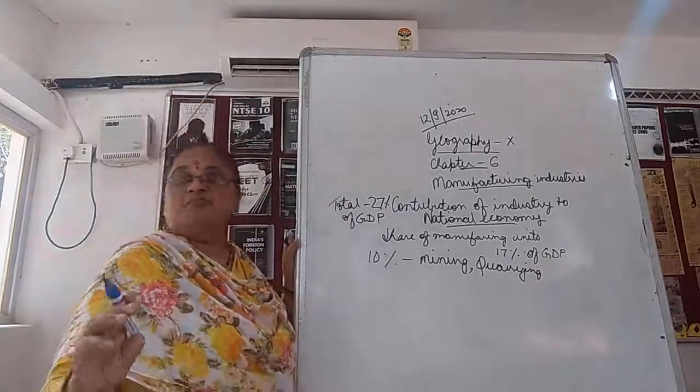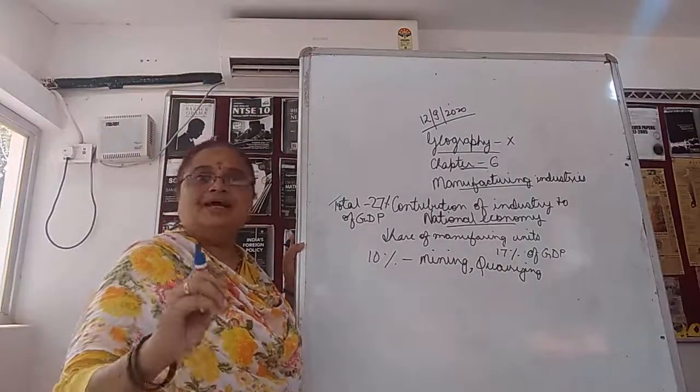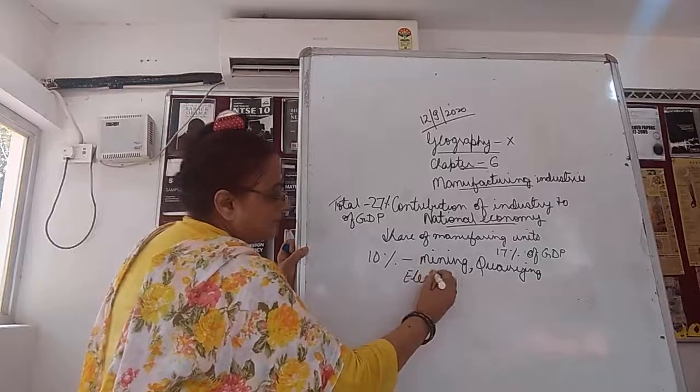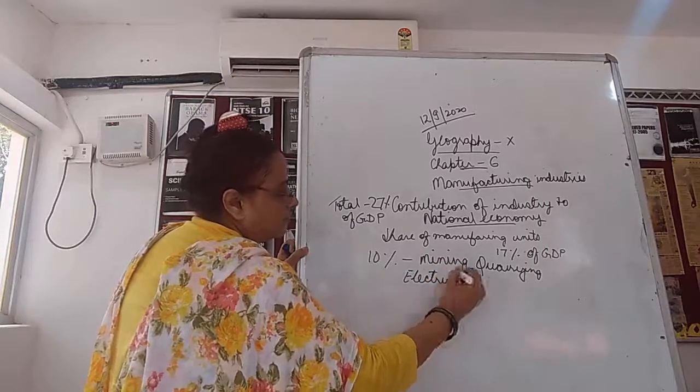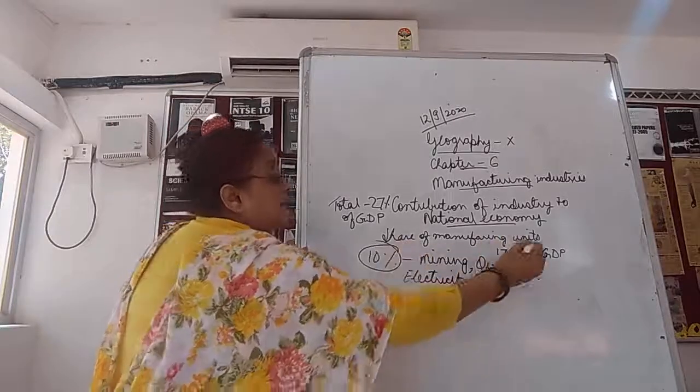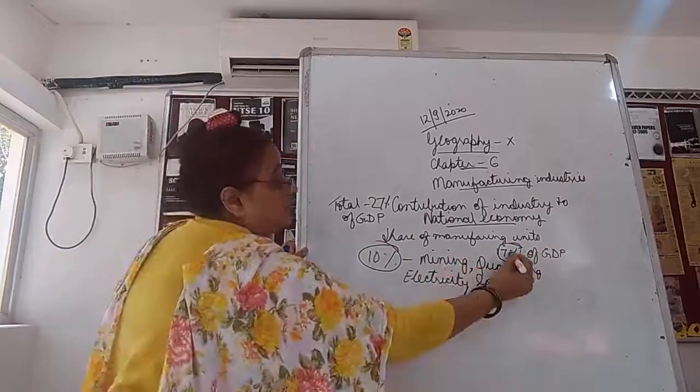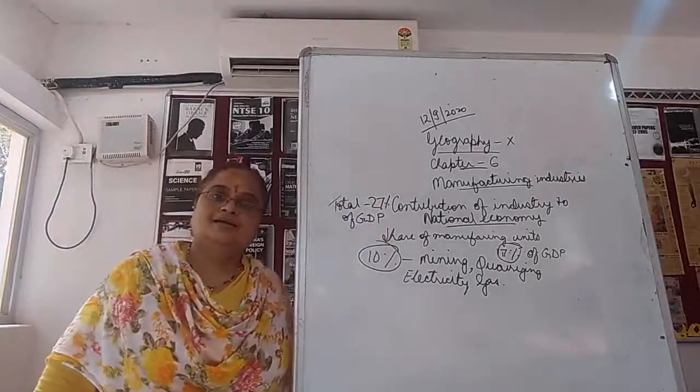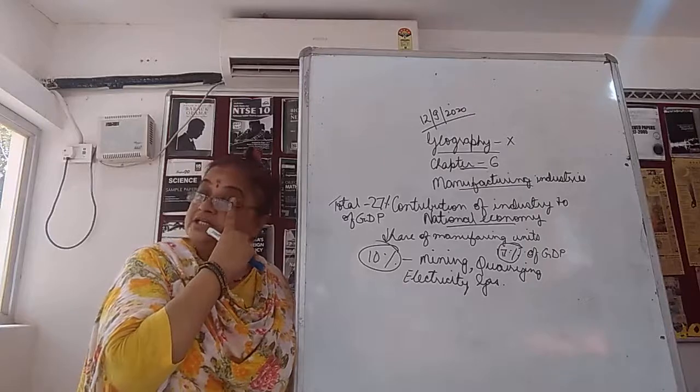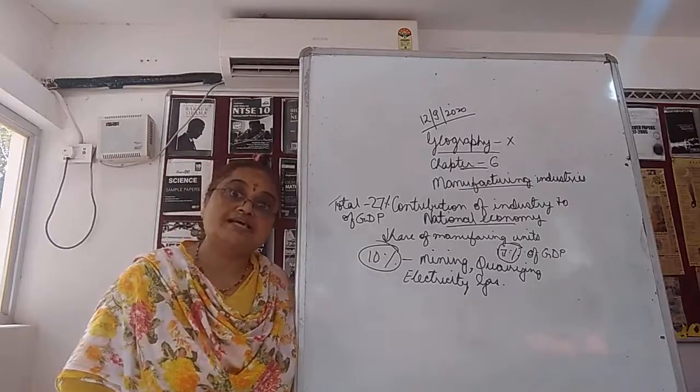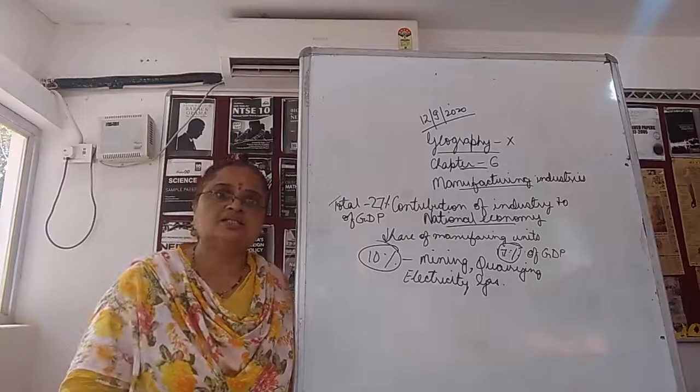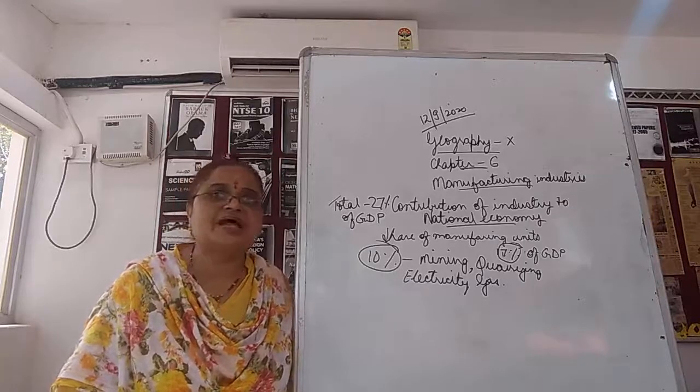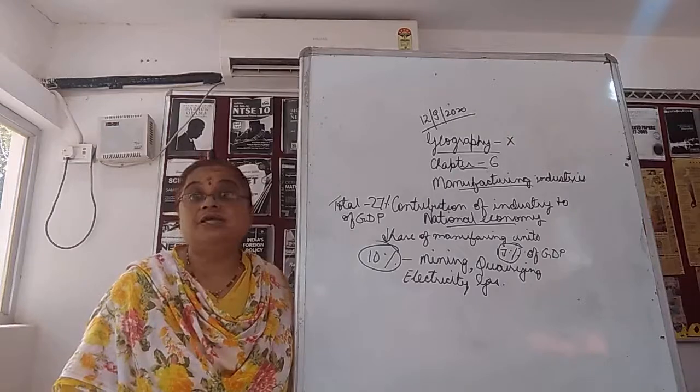Industries are contributing to the GDP in the last two decades, means you understand 1990 to 2000 and 2000 to 2010. At that time 27% of GDP was the contribution of the manufacturing units of the industries. Of which 17% was of manufacturing units and 10% was mining, quarrying. Please understand that different units of industry have been given different names.